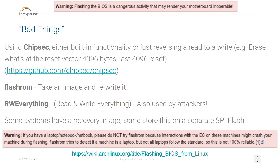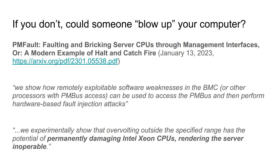Attackers have tools at their disposal to write your SPI flash, permanently change your system, or even brick it. Attackers have things like Flashrom and RW Everything — tools designed to create and apply updates — but attackers can use that functionality to write to your SPI flash and effect change on your UEFI subsystem. Through recent research, they could also use access to things such as a BMC or management interface to cause physical damage. If the attacker's goal is to blow up your computer, there are proven research papers and examples of researchers demonstrating just that.